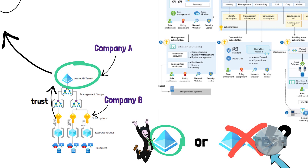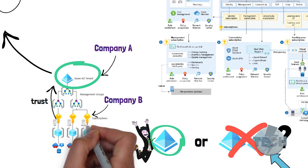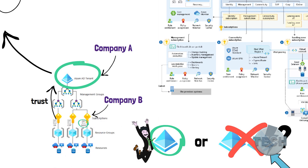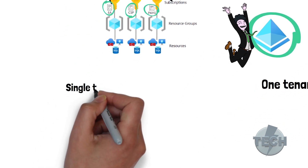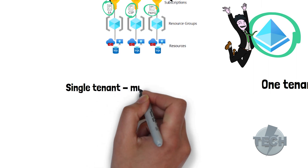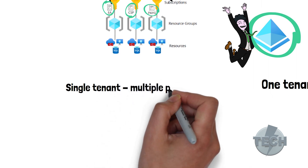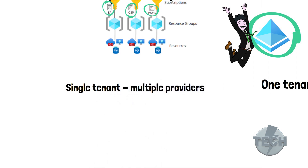As we saw in the drawing, licensing is set per subscription and not at the tenant level, so you can have a mix of subscriptions which are EA, CSP, and pay-as-you-go from different vendors. However, there are some things which should be considered if you go for a single tenant setup.